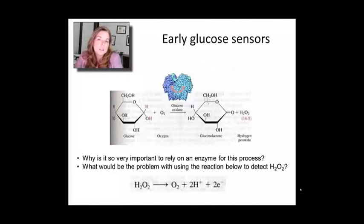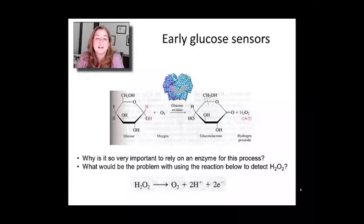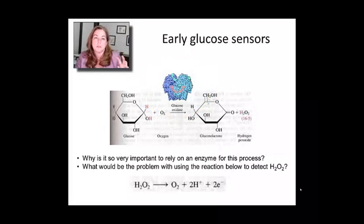Early glucose sensors realized that measuring glucose in blood creates a specificity problem—you've got many types of sugars in blood. If you're interested in glucose, you need specificity, and one of the best places to get that is nature herself. Glucose oxidase is an enzyme that converts glucose to gluconolactone, very specific just for glucose.